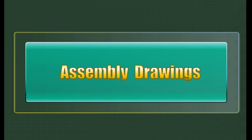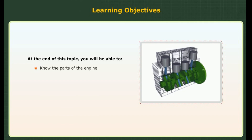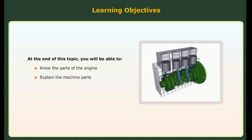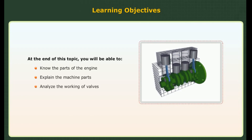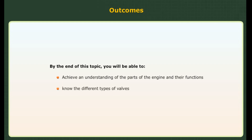Assembly drawings. Learning objectives: at the end of this topic you will be able to know the parts of the engine, explain the machine parts, and analyze the working of valves. Outcomes: by the end of this topic you will be able to achieve an understanding of the parts of the engine and the functions, and know the different types of valves.